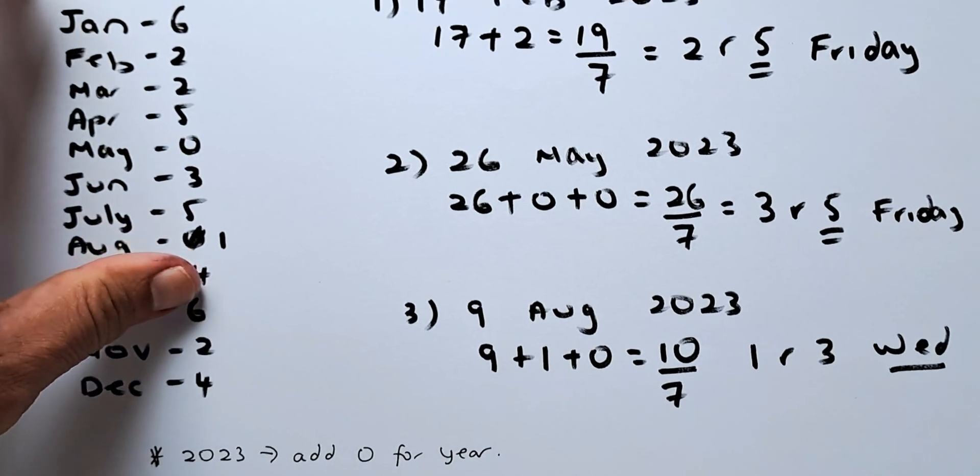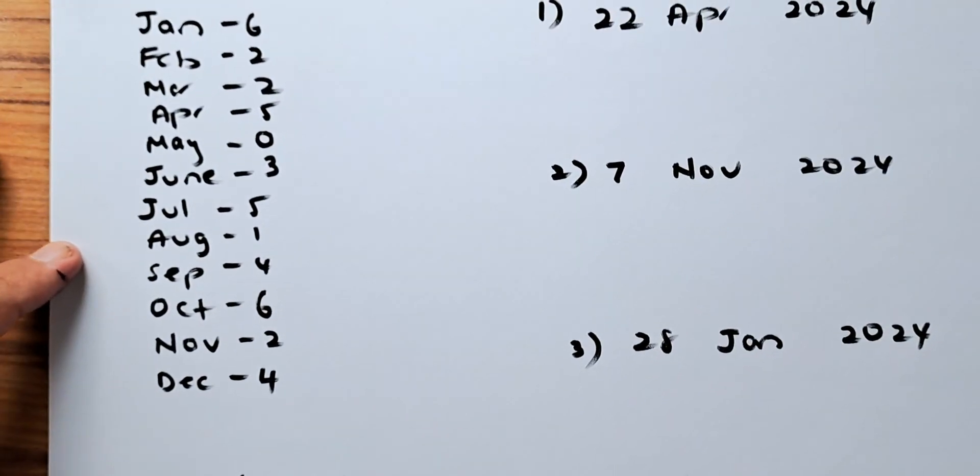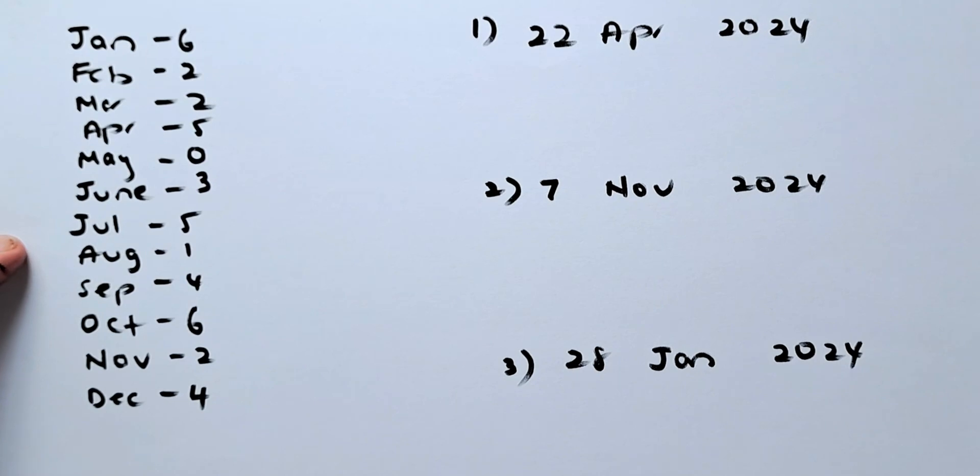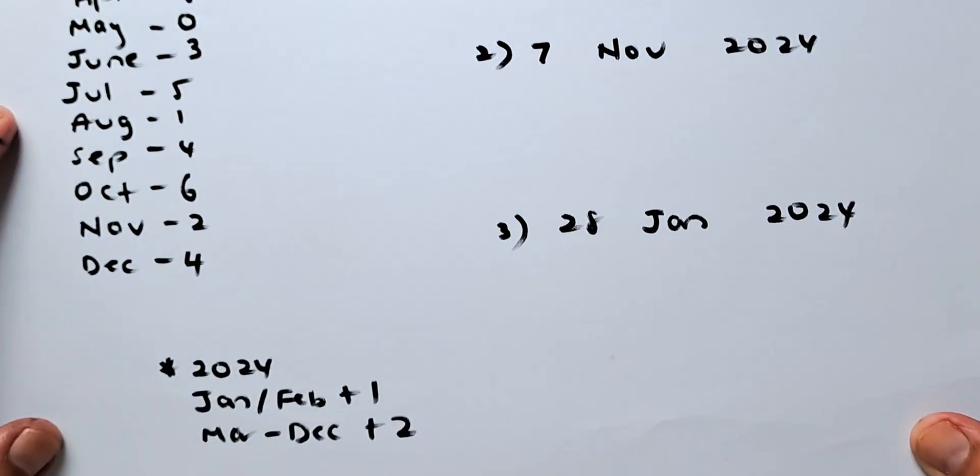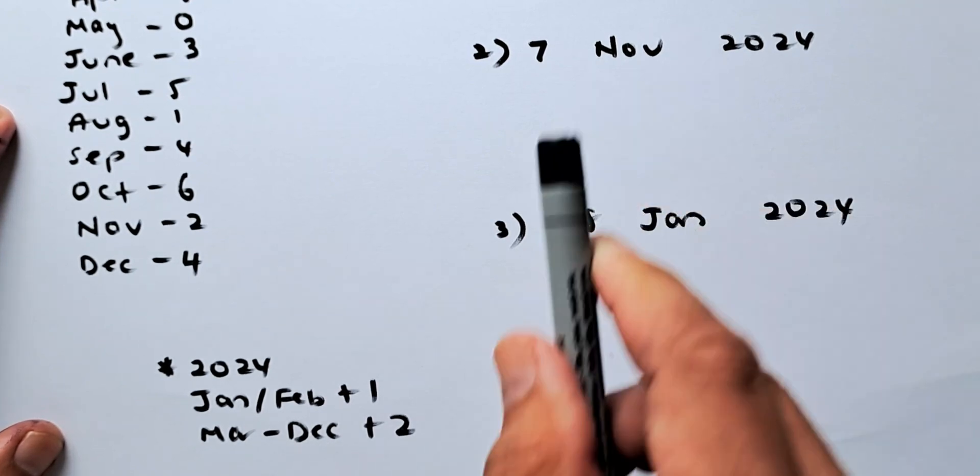Now what happened in 2024? 2024 is a leap year. Any number that can be divided by 4 is a leap year. For leap year, you have to follow this rule. So for the year 2024, for January and February, you add 1 to the answer. If anything from March onwards to December, you're going to add 2 for the year 2024.